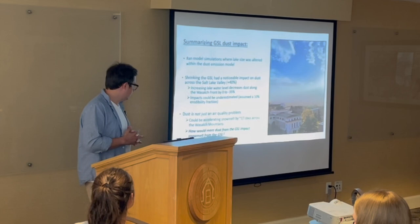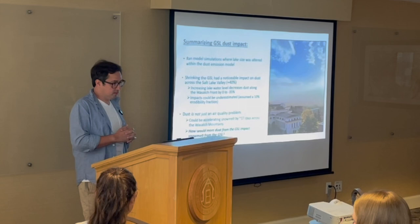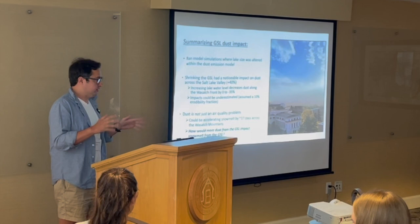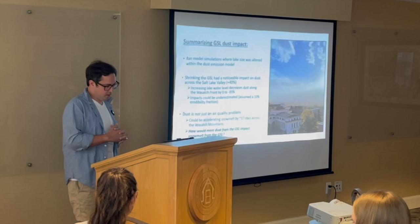The key takeaway is that altering the Great Salt Lake size — decreasing or increasing lake levels — has a noticeable impact on dust across the Salt Lake Valley and surrounding regions. The 10% erodibility fraction assumption may be making these differences smaller than they actually are. Beyond air quality, dust could also be accelerating snowmelt by upwards of 17 days, as recent work has shown. Going forward, this modeling framework could be used to project how continued lake shrinkage would further accelerate snowmelt.